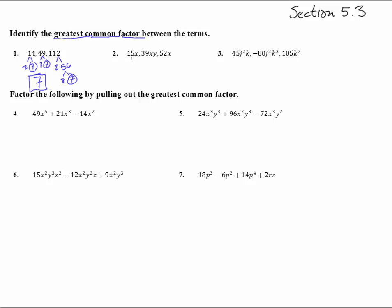Number 2. We have an X in everything, so we're at least going to get an X, but let's try the numbers. 15 is 3 times 5, 39 is 3 times 13, and 52 is even — 2 times 26, which is 2 times 13. 13 is in two of them but not the first, and 3 is in two of them but not 52. So there's no common number factor across all three, and just X is the greatest common factor.